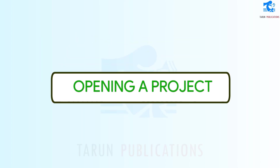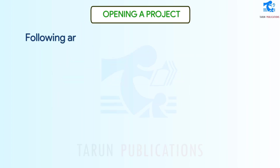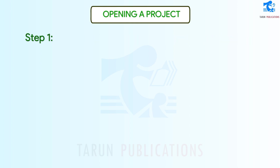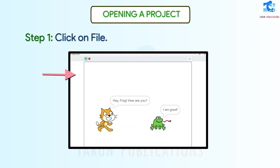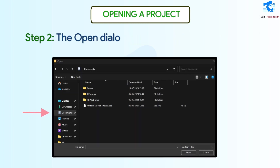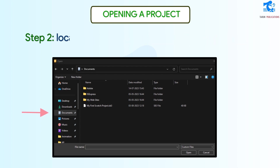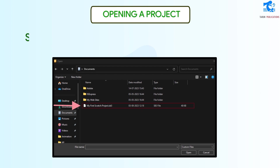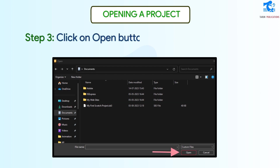Opening a Project. Follow these steps to open an existing project. Step 1: Click on File. Step 2: Select Load from Your Computer option. The Open Dialog box appears. Browse the location of your project and select the name. Step 3: Click on the Open button to open the project.